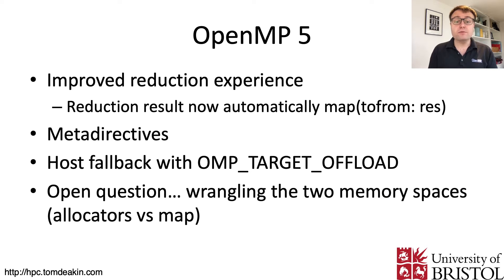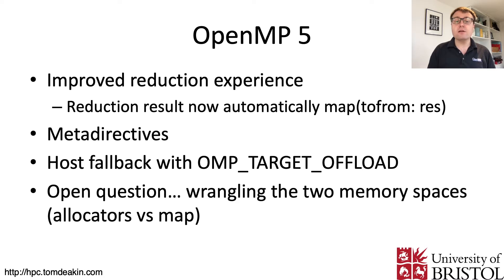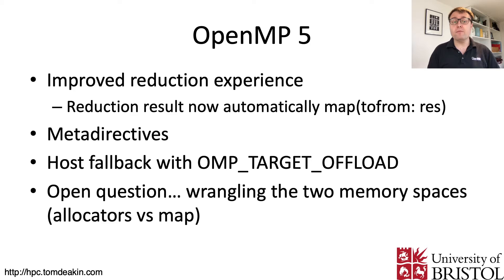OpenMP 5 was released a few years ago with key features for GPU targeting. Reductions are now more seamless: in OpenMP 4.5 you had to add a map clause on the target kernel to return the reduction result to the host — if you missed it, you'd lose the result. In OpenMP 5, the map clause is no longer needed; the result is automatically mapped back to the host, giving a much more streamlined experience.